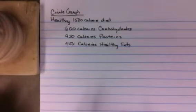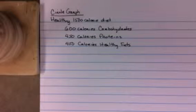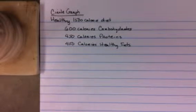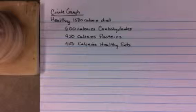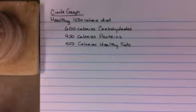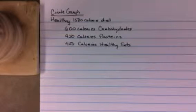So if we were asked to make a circle graph of this data, first remember that a circle graph is most appropriate when you have a whole and you're breaking it into parts. We want to figure out what part of this circle belongs to carbohydrates, what part belongs to proteins, and what part belongs to healthy fats.